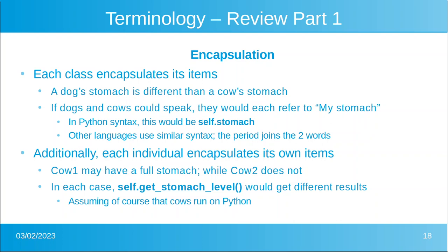Then we talked about encapsulation. Essentially, each class encapsulates its items as its own. A dog's stomach is different than a cow's stomach. But if we could speak with them, they would each say 'my stomach.' In Python, we don't say 'my stomach' — we say 'self.stomach.' Other languages use very similar syntax. Usually, a period is what separates the different parts of an object.